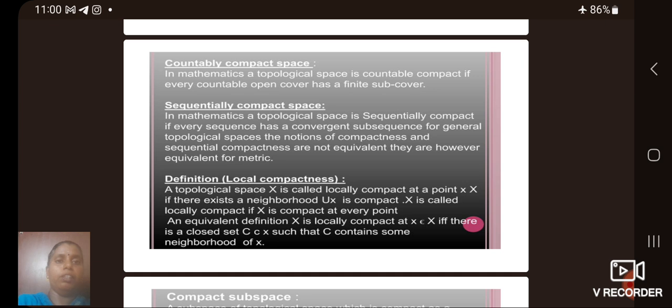Next, we see the definitions of countably compact space and sequentially compact space. In mathematics, a topological space is countably compact if every countable open cover has a finite subcover. Then, in mathematics, a topological space is sequentially compact if every sequence has a convergent subsequence. For general topological spaces, the notions of compactness and sequential compactness are not equivalent. They are, however, equivalent for metric spaces.